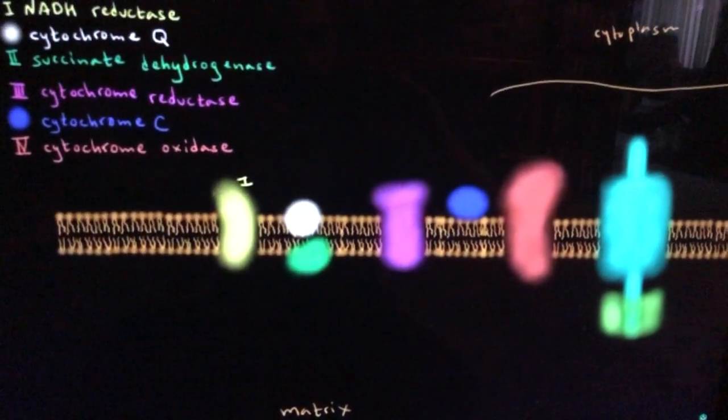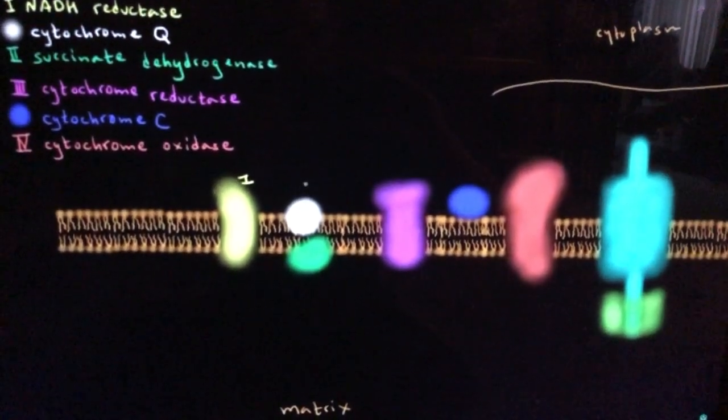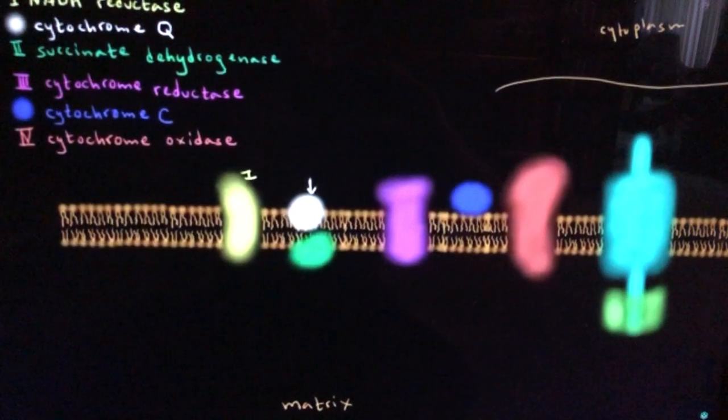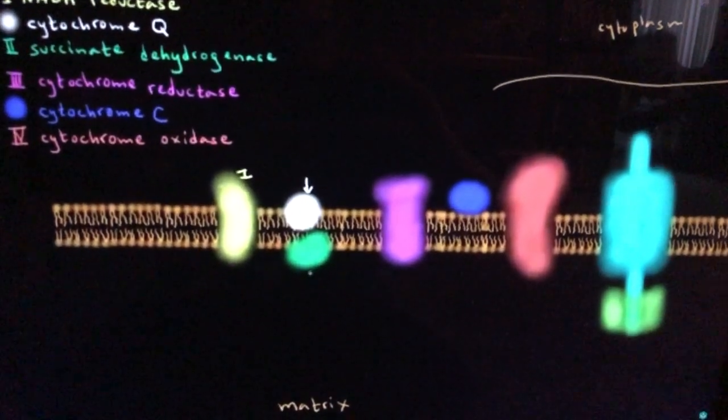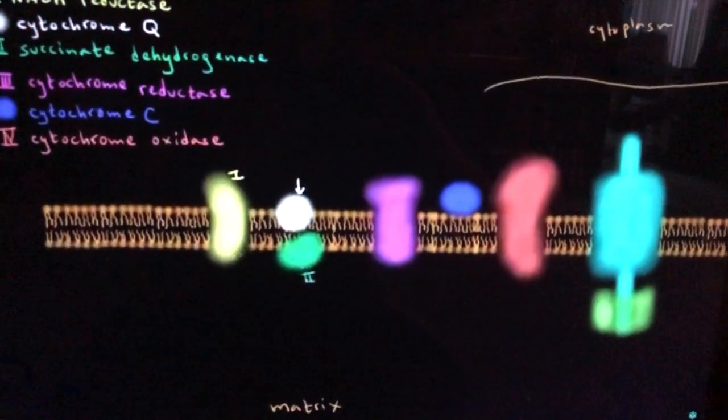That's NADH reductase. Then this white one, that's cytochrome Q. This green one is succinate dehydrogenase.